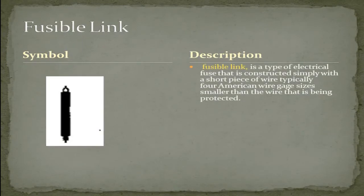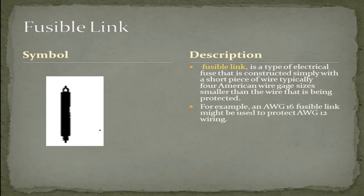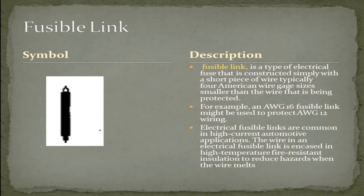Fusible link is a type of electrical fuse that is constructed simply with a short piece of wire. Typically, four American wire gauge sizes smaller than the wire that is being protected. For example, a 16 gauge fusible link might be used to protect a 12 gauge wire. Electrical fusible links are common in high current automotive applications. The wire in an electrical fusible link is encased in high temperature fire resistant insulation to reduce hazards when the wire melts.